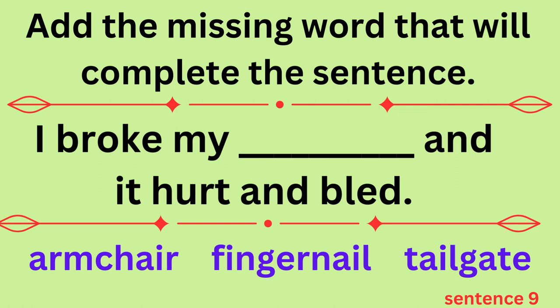Sentence nine: I broke my blank and it hurt and bled. Would the answer be armchair, fingernail, or tailgate?